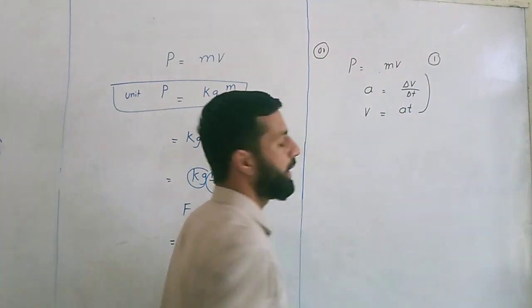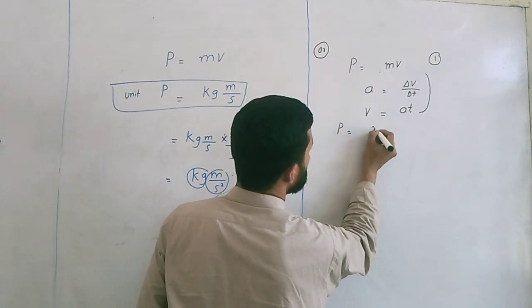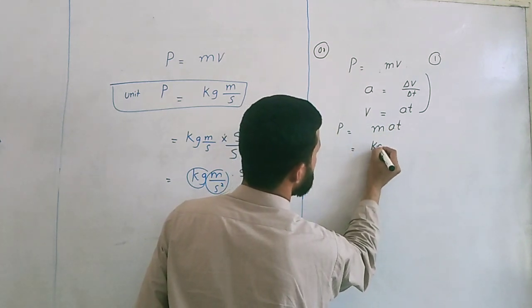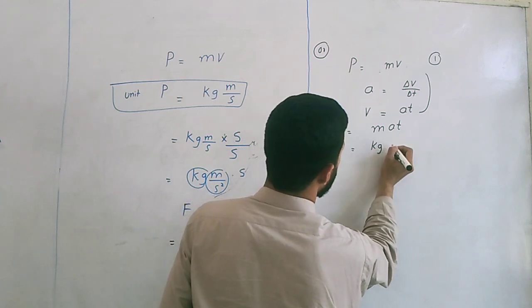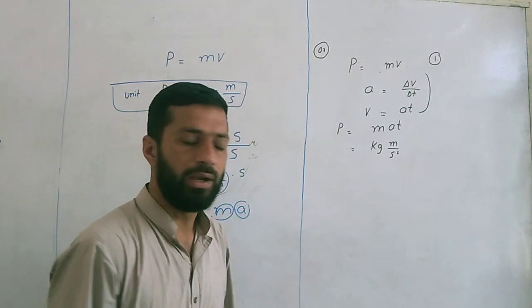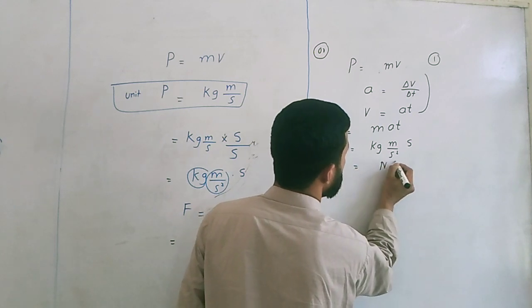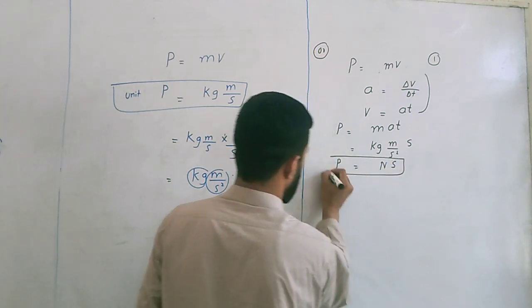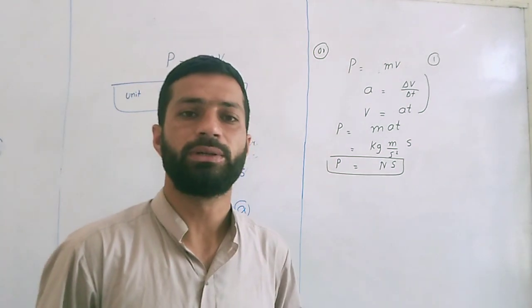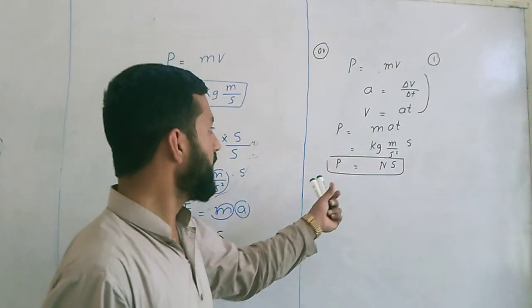Put this in equation 1. So, linear momentum will become P is equal to M times AT. The unit of mass is kilogram, the unit of acceleration is meter per second squared, and the unit of time is second. So this will become Newton second. As we inspect, the unit of momentum is kilogram meter per second and it is also Newton second.